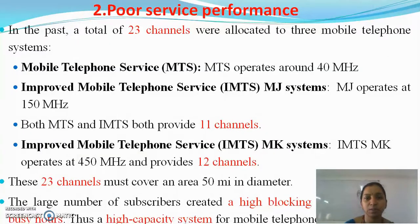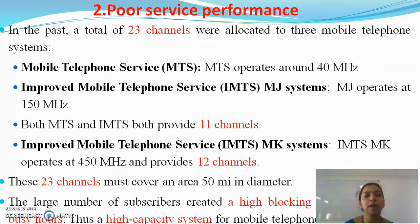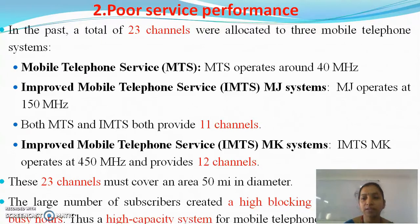Next, coming to poor service performance. In the past, a total of 23 channels were allocated to three mobile telephone systems: Mobile Telephone Service (MTS), and Improved Mobile Telephone Service (IMTS), which is further classified into MJ system and MK system. MTS operates around 40 MHz, and IMTS MJ system operates at 150 MHz. Both MTS and IMTS provide 11 channels total, while the MK system operates at 450 MHz and provides 12 channels.